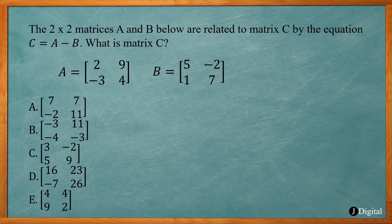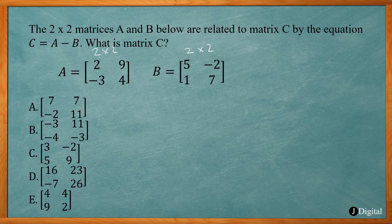This first problem says the 2 by 2 matrices A and B are related to matrix C by the equation C equals A minus B. In order to add or subtract matrices we need to have the same dimensions. Matrix A is a 2 by 2 matrix — 2 rows, 2 columns. Matrix B is also 2 by 2, so we have the same dimensions and can subtract them.